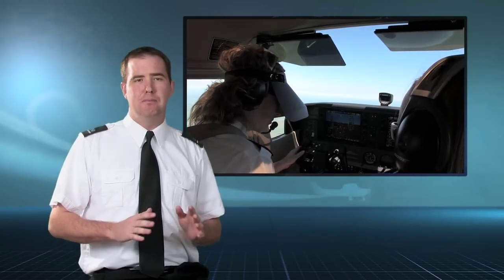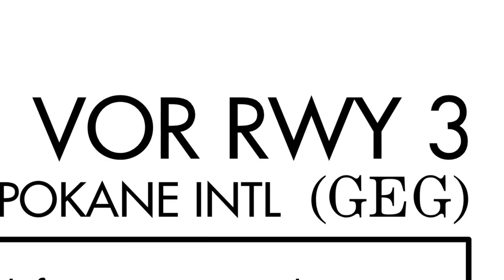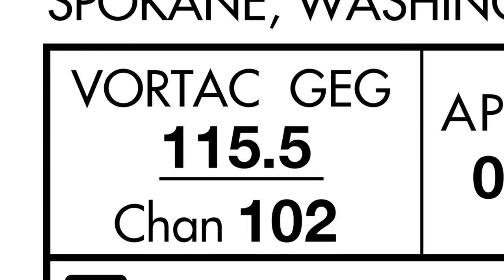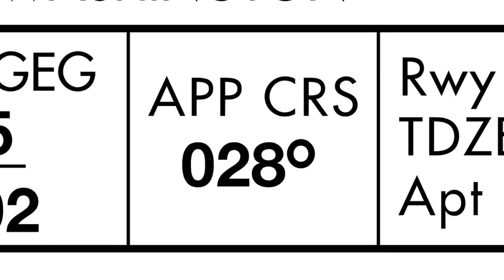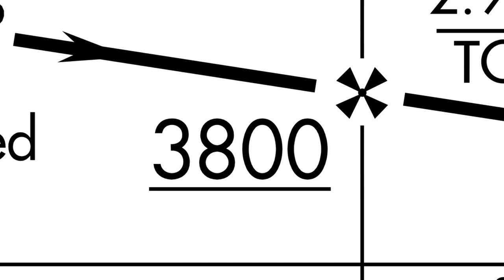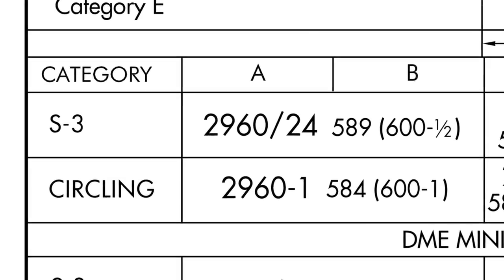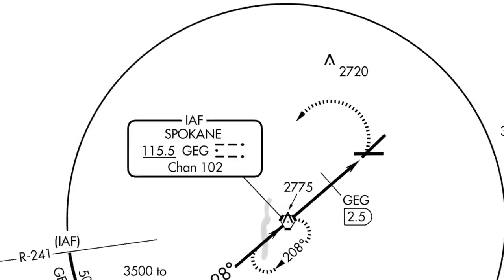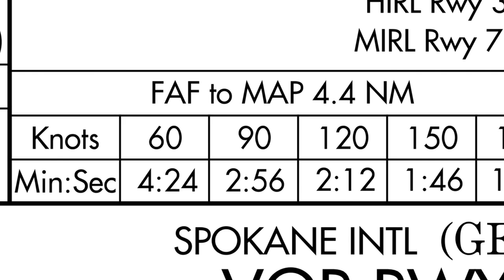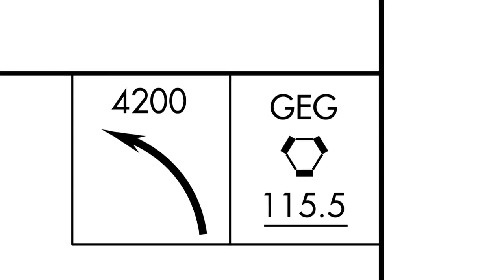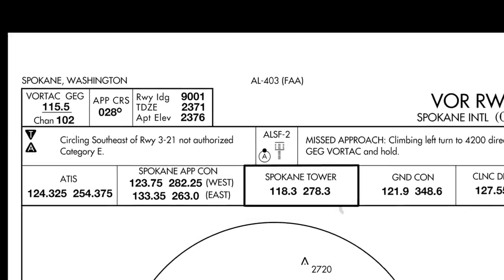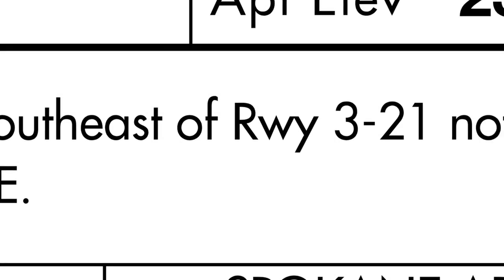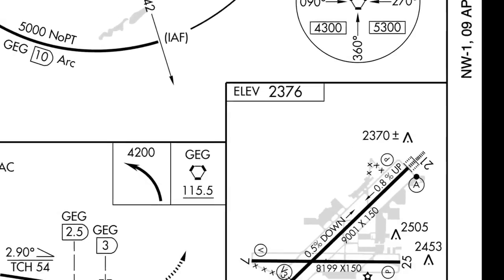The approach briefing is notably important as it allows the pilot to familiarize him or herself and other crew members with the instrument approach procedure to be used. The approach briefing should contain the following items: type of approach, primary NAV aid, frequency, identifier, final approach course, minimum altitude at the final approach fix, lowest applicable minimum descent altitude, airport elevation and touchdown zone elevation, missed approach point, missed approach instructions, applicable approach procedure notes, indicated airspeed and flap configuration to be flown, and landing runway and runway length.